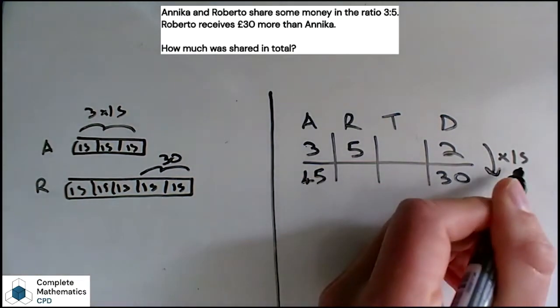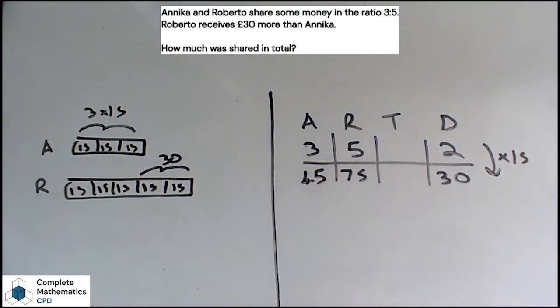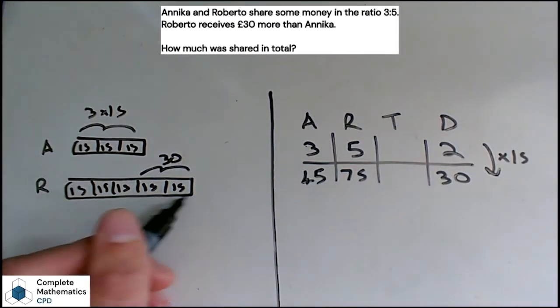Again, 5 times 15 would give me 75 here. Where does that sit in the bar model? Well, you can see I've got five 15s here, so I've got 5 times 15 which is 75 as well.